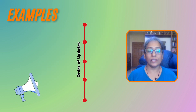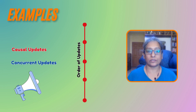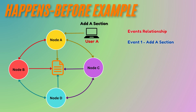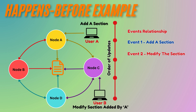Now that we understand causality, let's explore examples where operations are causally related. Imagine User A makes an edit to a shared document, adding a new section. Shortly after, User B updates the document, modifying the section added by User A. In this case, User B's update clearly builds upon the change made by User A — we can say that User A's edit happened before User B's edit, because User B's change is causally dependent on User A's action.